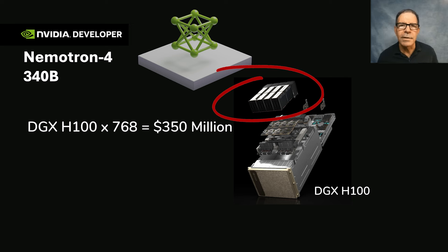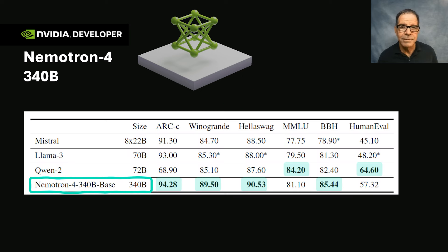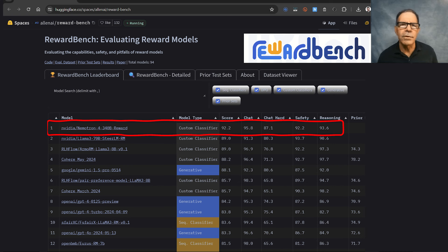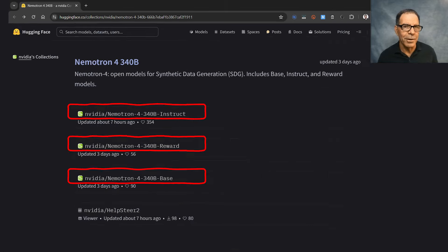And the final result has very impressive performance on a wide range of metrics, as you can see here. It supports more than 50 languages and 40 programming languages, and it's currently in first position overall on RewardBench. You can already download the model now on Hugging Face.